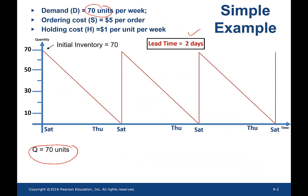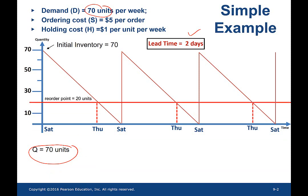Since the lead time is 2 days, the buyer will place an order of 70 units by end of Thursday. Equivalently, the reorder point is equal to 20 units — that is, a product of lead time and average demand. So 2 times 10 is 20 units.